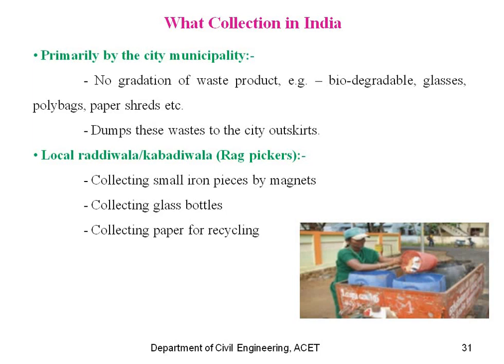Waste collection in India: Primary collection is done by the city municipality, with no gradation of waste products — for example, biodegradable waste, polybags, paper shreds, etc. — all dumped at city outskirts. Second is local raddiwalas, kabadiwalas, and rag pickers — collecting small iron pieces by magnets, collecting glass bottles, and collecting paper for recycling.